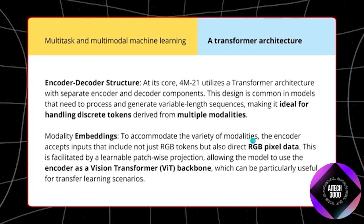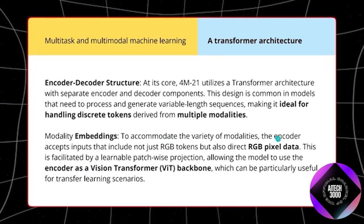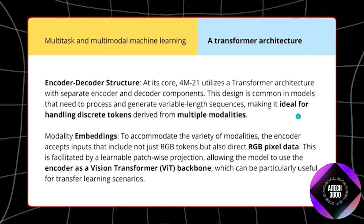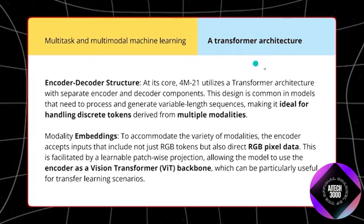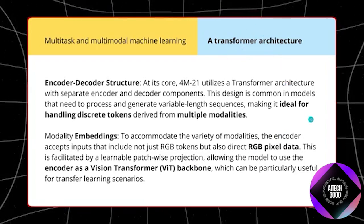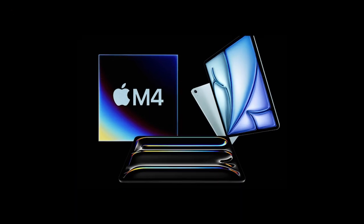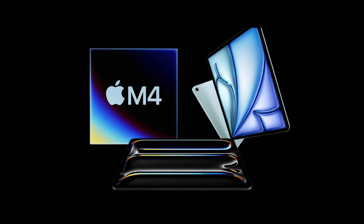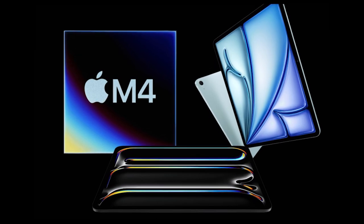What sets Apple's 4M apart is its unified architecture for diverse modalities, integrating text, images, audio, and spatial data into a single system. This demonstrates the power and flexibility of the 4M AI model, eliminating the need for multiple specialized tools, streamlining workflows, and enhancing productivity.